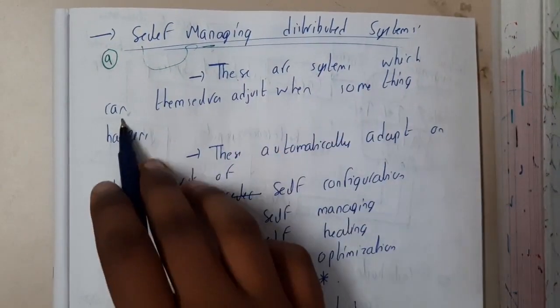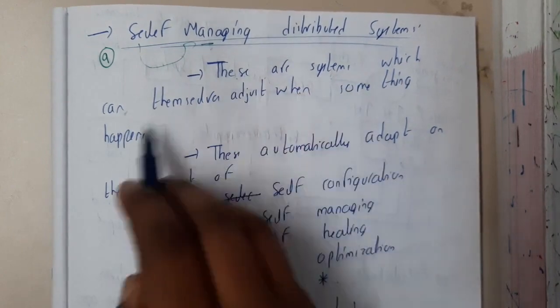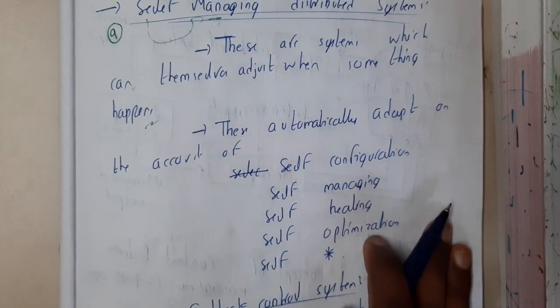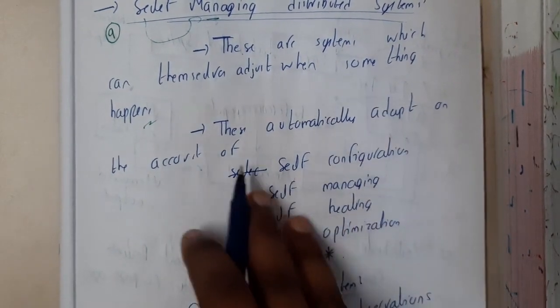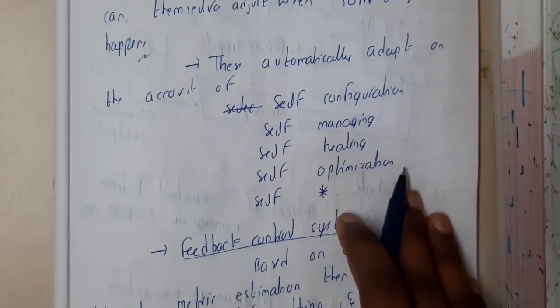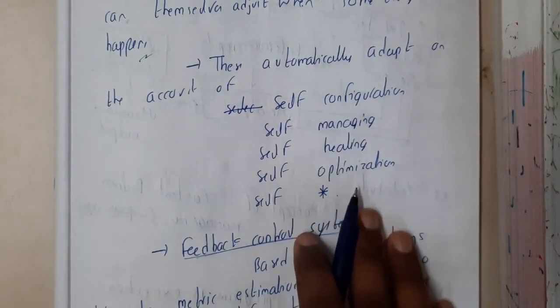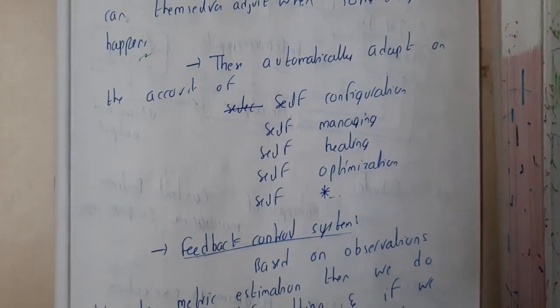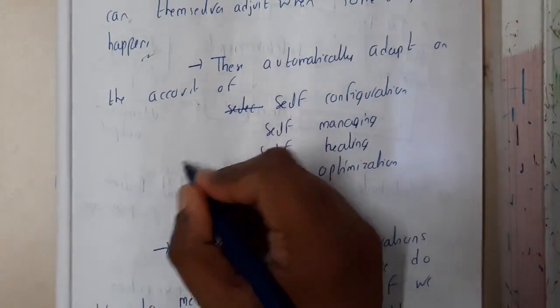These are the systems which can themselves adjust when something happens, something bad or wrong. These systems can adapt themselves to be on the positive side. They automatically adapt on account of self-configuration, self-managing, self-healing, self-optimization, or self-anything.